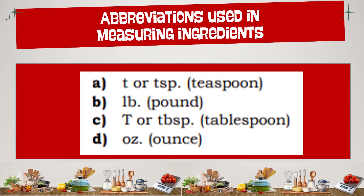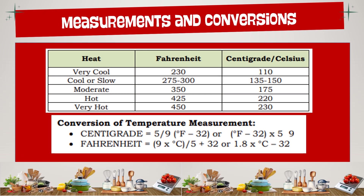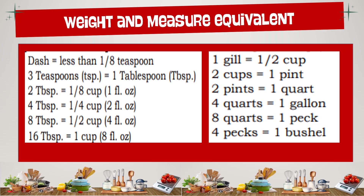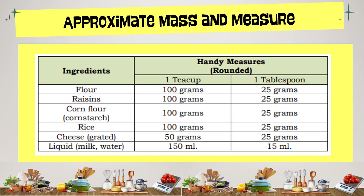The following are the abbreviations used in measuring ingredients. Measurements and conversions of temperature, including the formula for converting centigrade or degrees Celsius to Fahrenheit, and Fahrenheit to degrees Celsius, are also presented. Weight and measure equivalents, and approximate mass and measure tables, are provided.